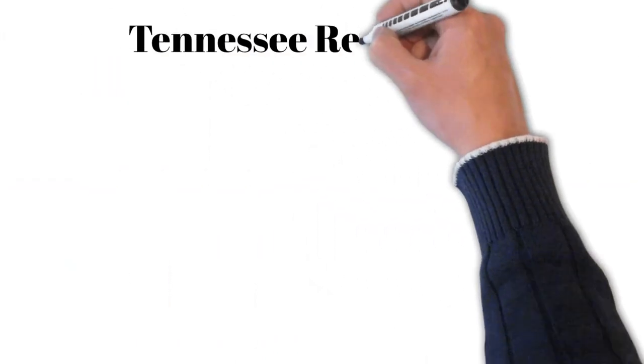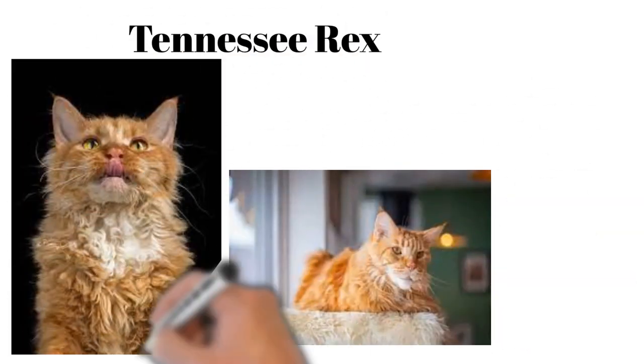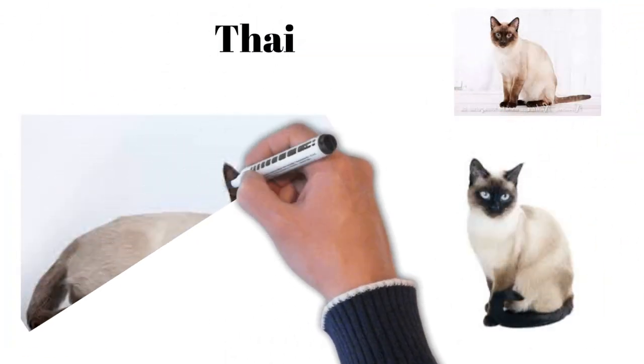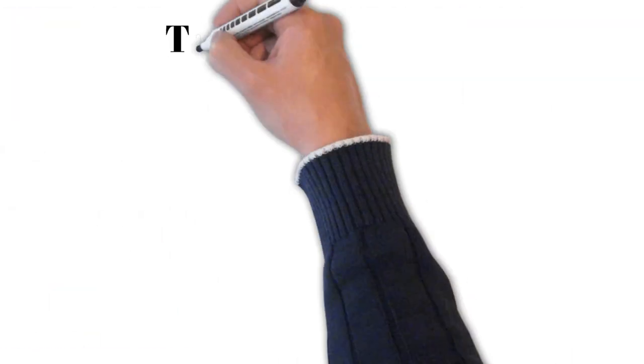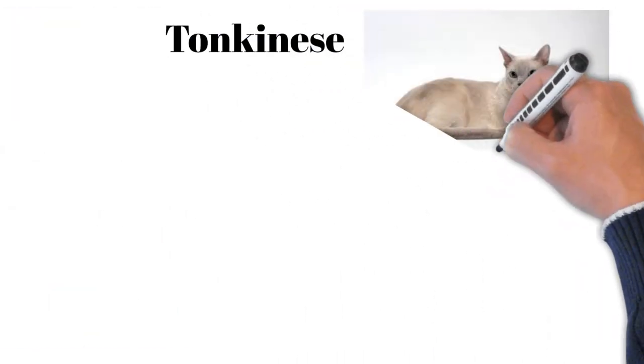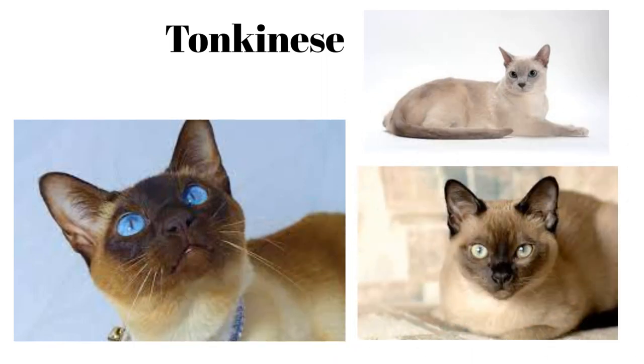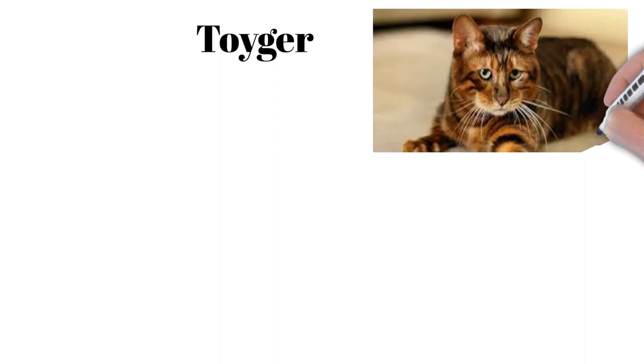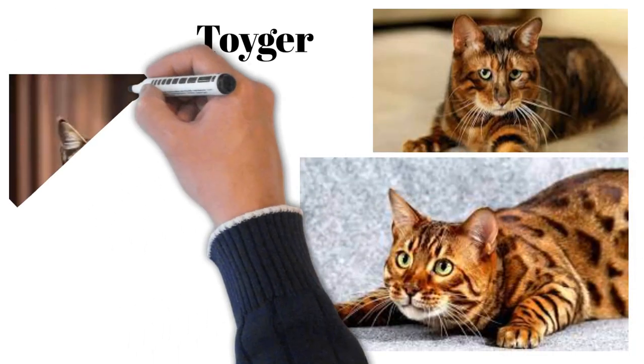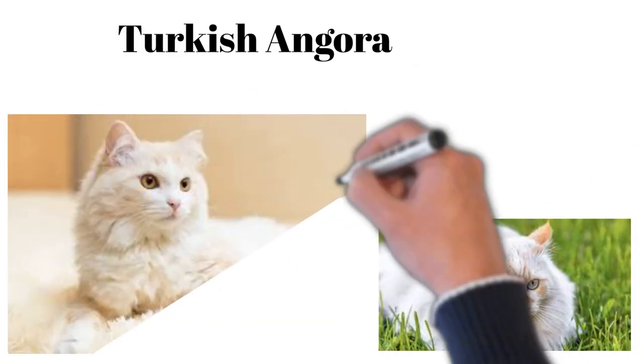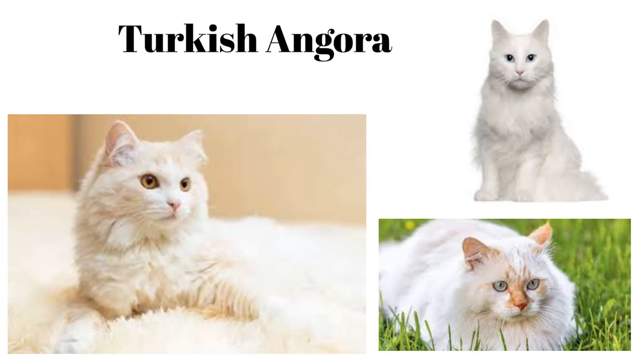Tennessee Rex: curly coat, satin fur, friendly, playful. Thai: traditional Siamese look, sociable, vocal, enjoys interactive play. Tonkinese: blend of Siamese and Burmese, playful, sociable, affectionate. Toyger: designed to resemble a tiger, friendly, intelligent, playful. Turkish Angora: elegant silky coat, energetic, intelligent, and involved with family.